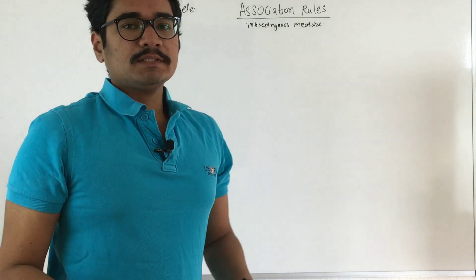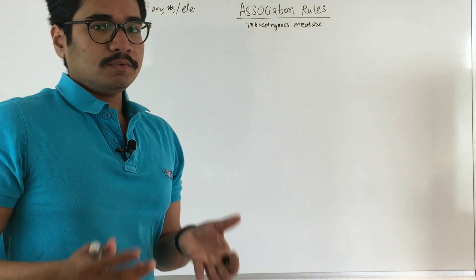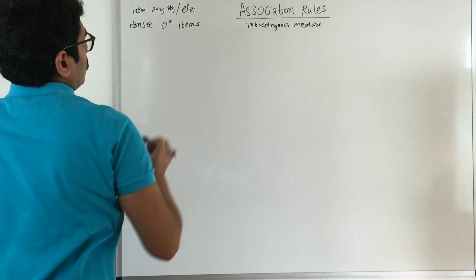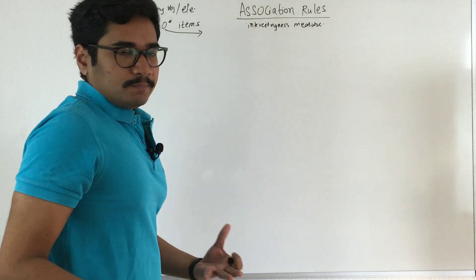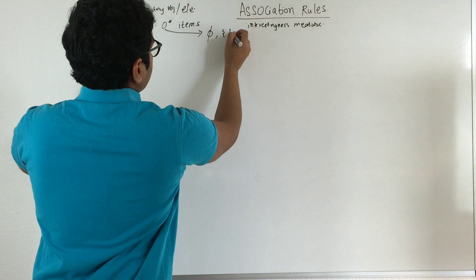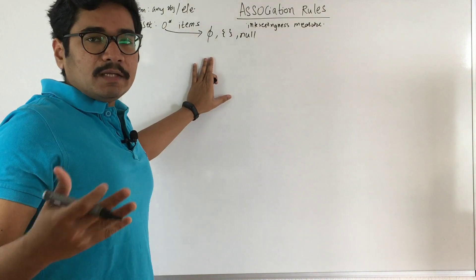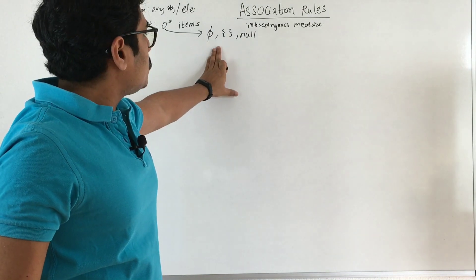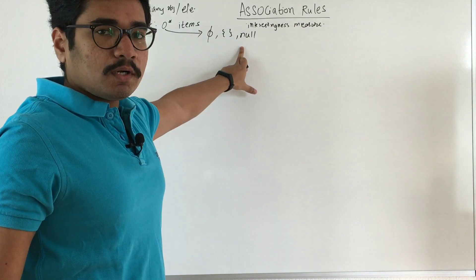In the real world, an item set is a collection of one or more items. But when you define association rules, it becomes a collection of zero or more items. The reason for zero is that if no items are present, you consider the empty set — also denoted as phi or null. So when constructing an item set, zero stands for the empty set.